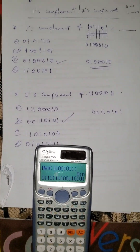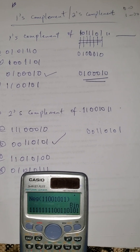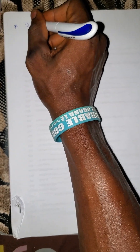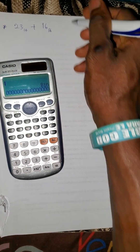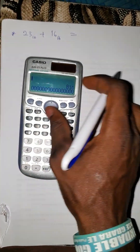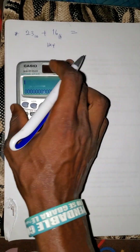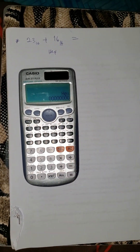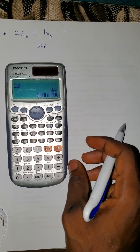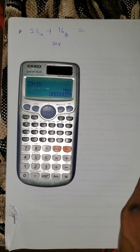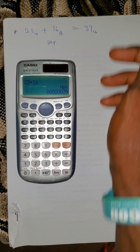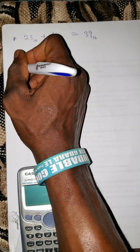So that is how you do the one's complement and the two's complement. Now let me give you some random questions on binary. For example: convert 23 base-16 plus 16 base-16. Both are in hexadecimal, so take your calculator to hex and add them. The answer is 39 base-16.